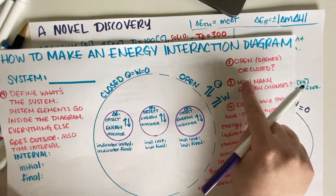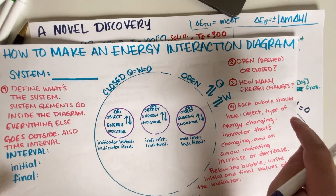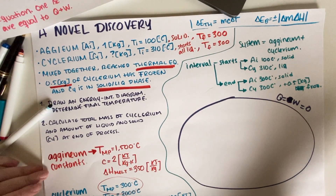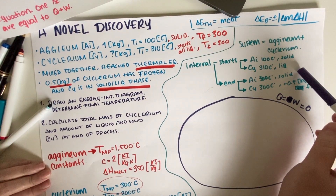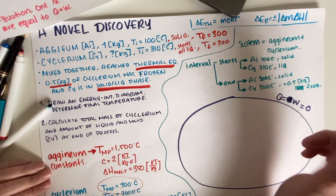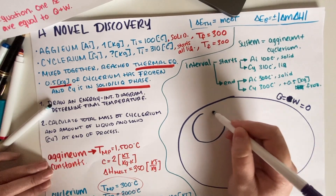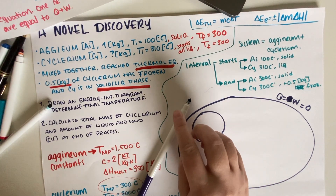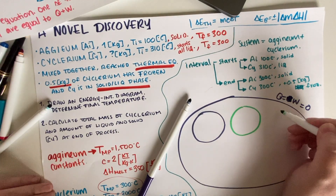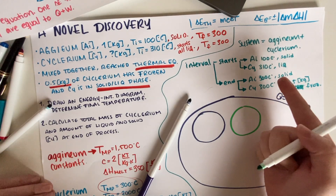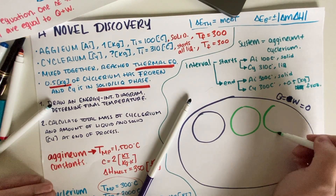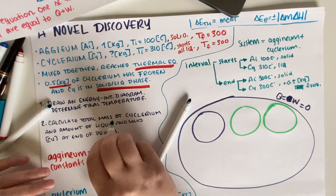Next, how many energy changes do we have? We have three. One for aginium — since aginium stayed solid, it only had a thermal energy change due to its temperature change. Two for cyclerium — cyclerium had a temperature change from 310°C to 300°C, and it also had a phase change, so we need a bond energy term as well.